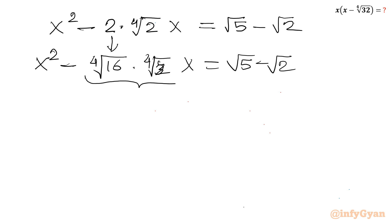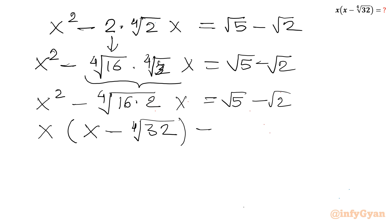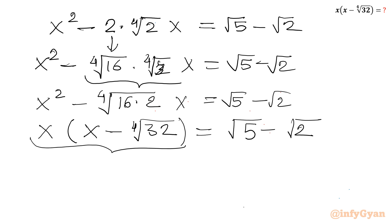Now I can take x common from the left-hand side. So I will write: x(x − ⁴√32) = √5 − √2. And this is the required expression. So our answer becomes √5 − √2.